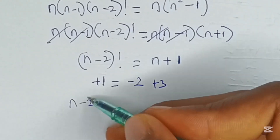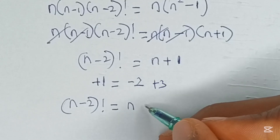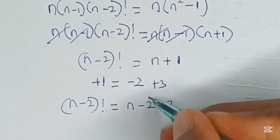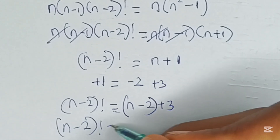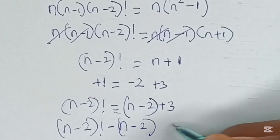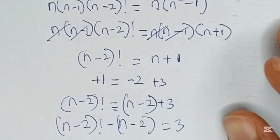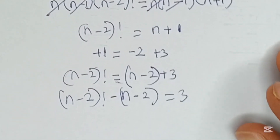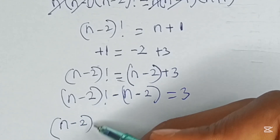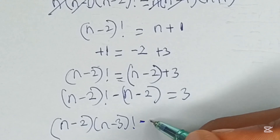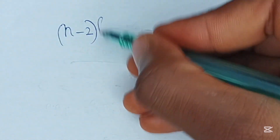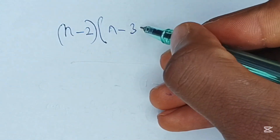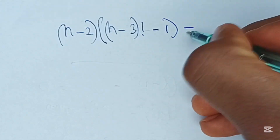So we can now say that n minus 2 factorial will be equal to n minus 2 plus 3. Grouping this and crossing it over to the other side, we have n minus 2 factorial minus n minus 2 is equal to 3. Recall that n minus 2 factorial can be expressed as n minus 2 multiplied by n minus 3 factorial, so we have n minus 2 into n minus 3 factorial minus 1 is equal to 3.